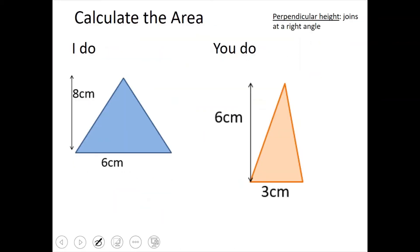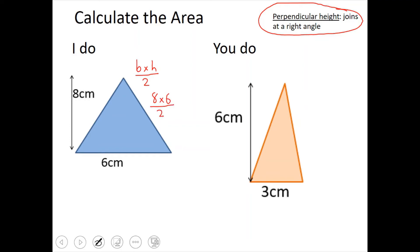Now we've got something called the perpendicular height — you have to remember this. Perpendicular height is when it joins at a right angle. So we've got base times height divided by 2: 8 times 6, divided by 2, which is 48 divided by 2, and my answer is going to be 24 centimeters squared.